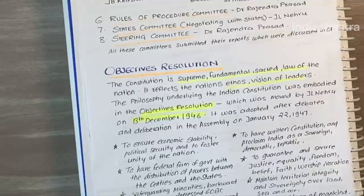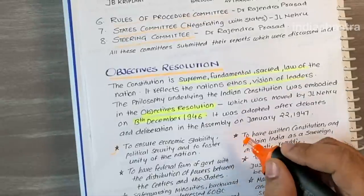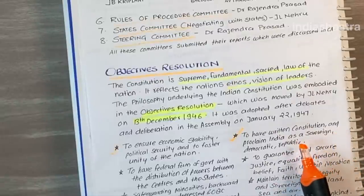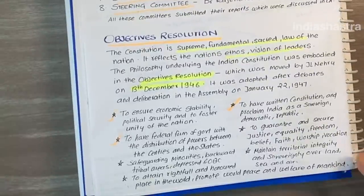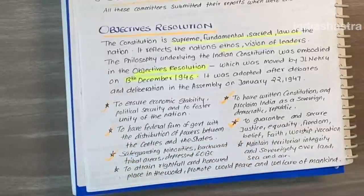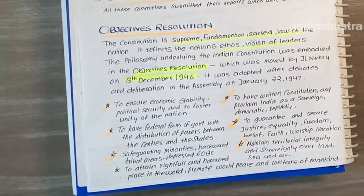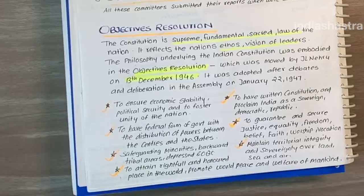The objectives resolution indicated that the constitution should ensure economic stability, political security, and foster unity of the nation. It would proclaim India as a sovereign, democratic, republic nation with a federal form of government and distribution of powers between the centre and the states. It would guarantee justice, equality, freedom, belief, faith, worship, and vocation to citizens. It would safeguard minorities, backward and tribal areas, and depressed classes. It would maintain territorial integrity and sovereignty over land, sea, and air, and help India attain a rightful and honored place in the world, promoting world peace and welfare of mankind.